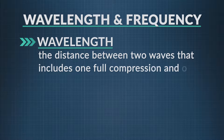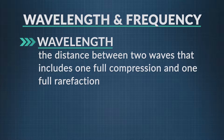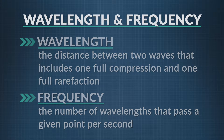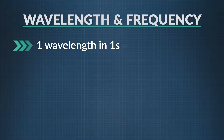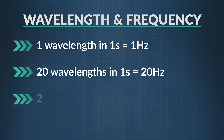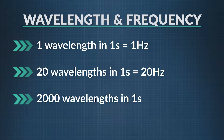We call the number of wavelengths that pass by a given point every second the frequency, which we measure in hertz. So one wavelength in one second would have a frequency of one hertz, twenty wavelengths in one second would be 20 hertz, and two thousand compressions per second would be 2,000 hertz.